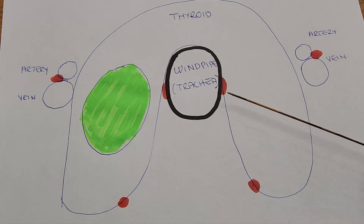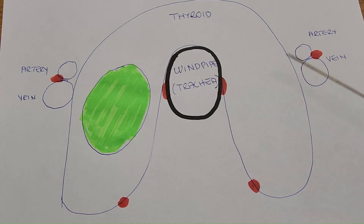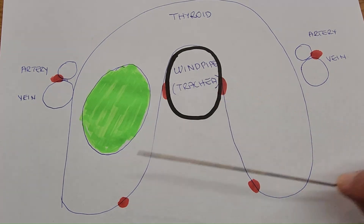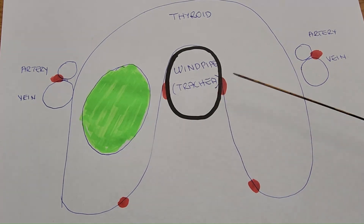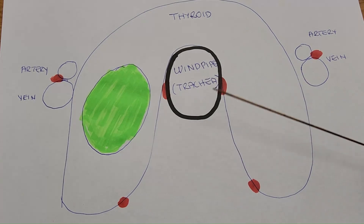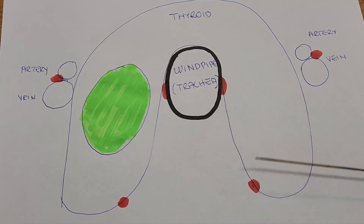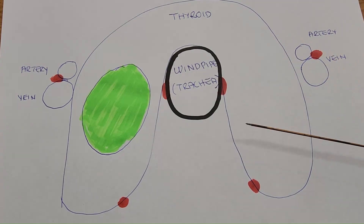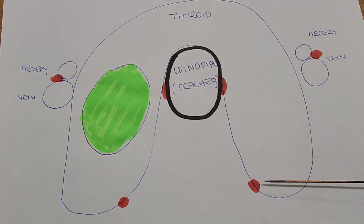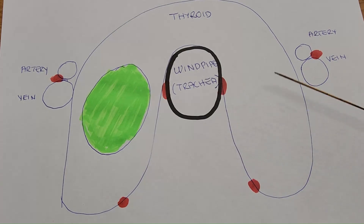These red spots are important nerves that may be responsible for your voice and other functions. We need to protect these nerves during the procedure.